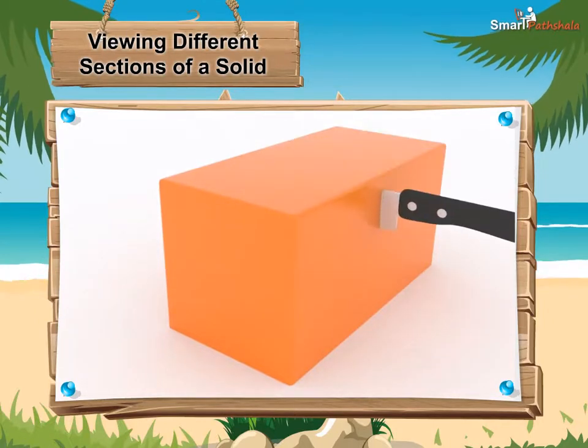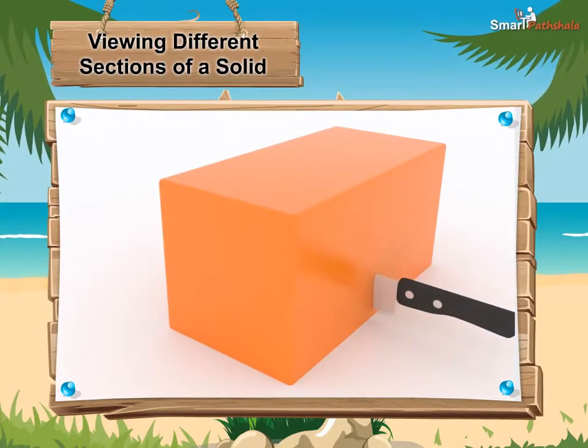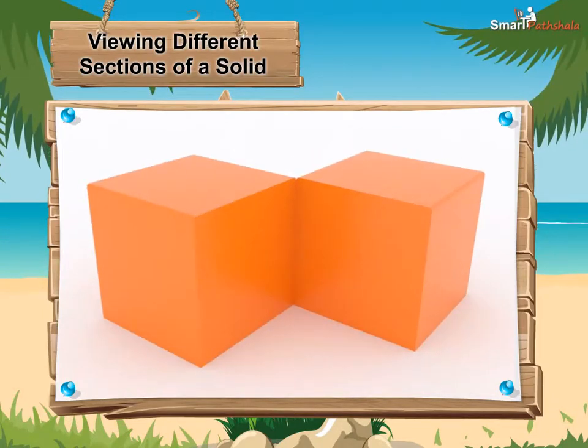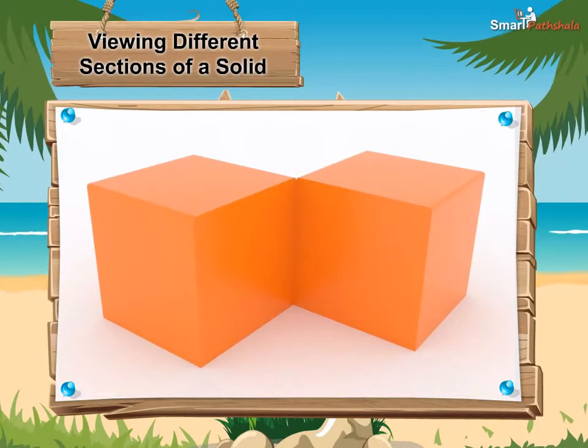For example, when a cuboid with a square face is cut vertically, then each face is a square. The face is a cross section of the cuboid.